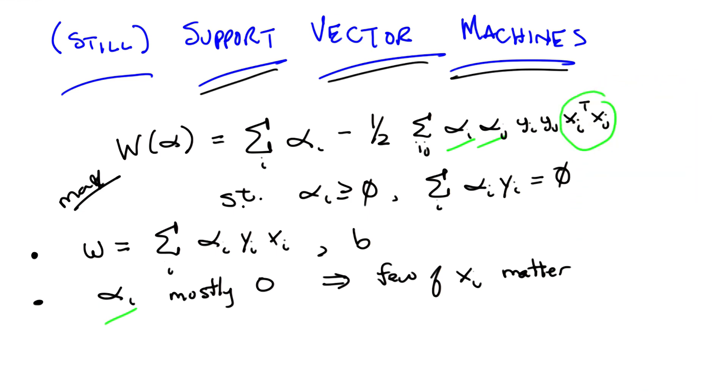So Michael, generally speaking, given a couple of vectors, what does xi transpose xj actually mean? It's the dot product. Right. And what is the dot product?